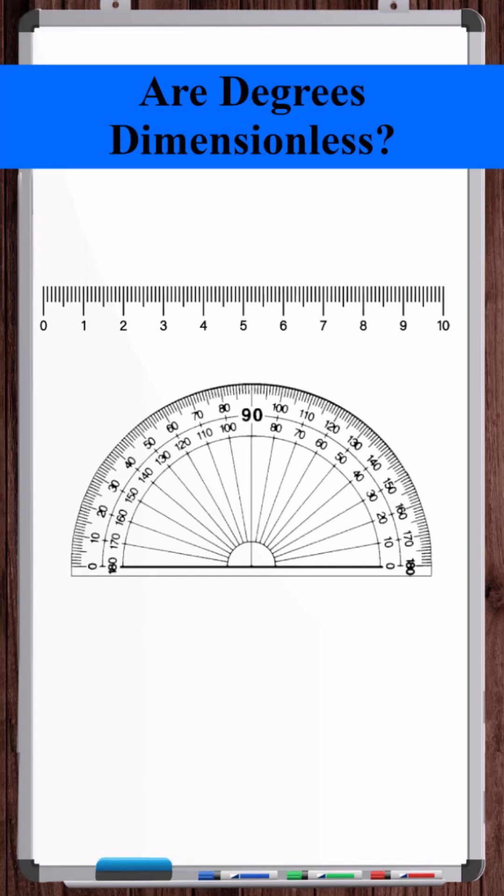Well, actually, both degrees and radians are units of angle measure, but both are dimensionless. All angles are dimensionless.